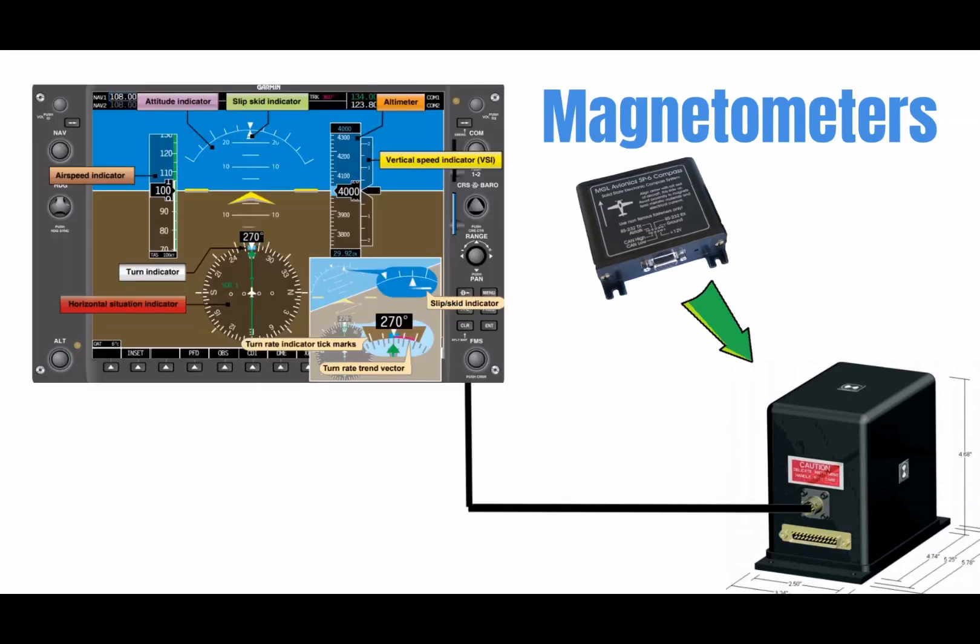The AHRS system then sends this data over to the primary flight display so you can read the information on the heading indicator. And the best part about this whole system is that it eliminates compass errors, which means you don't have to update your heading indicator anymore in flight.